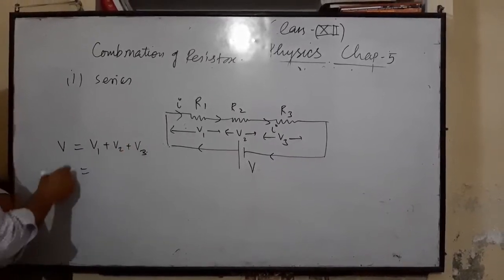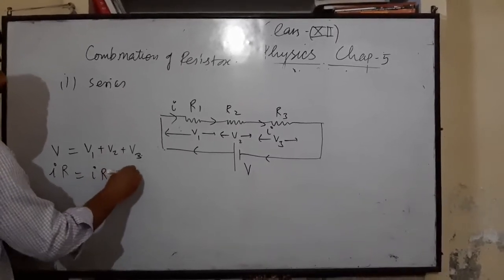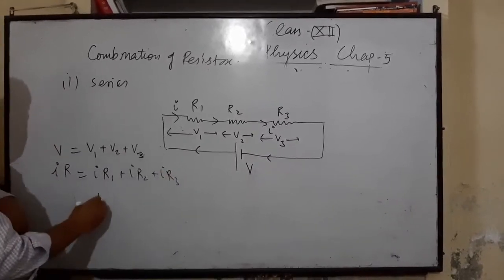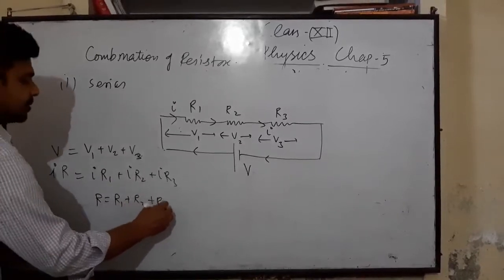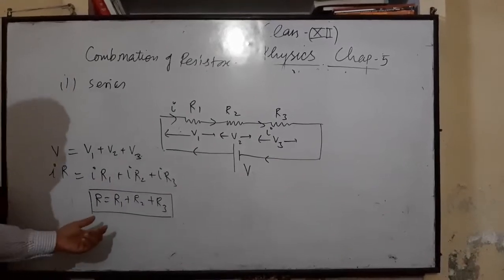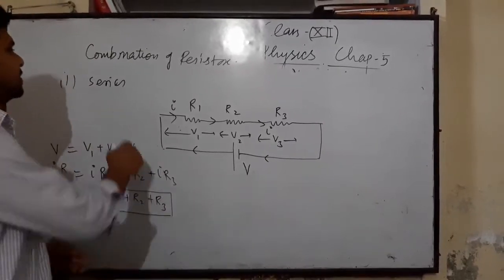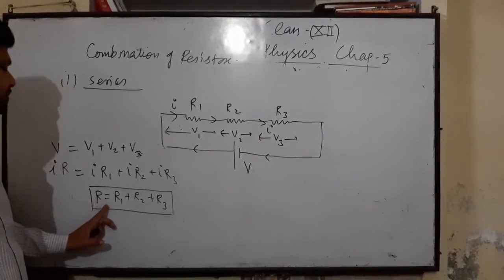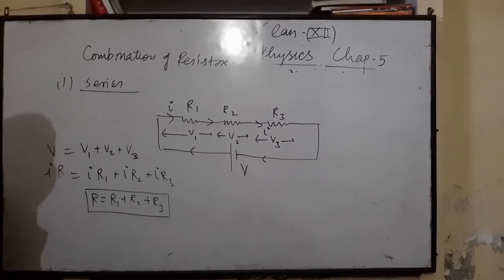Using V = IR, we get IR = IR1 + IR2 + IR3, where R is the equivalent resistance. So in series combination, the equivalent resistance R = R1 + R2 + R3. If we want to find the maximum equivalent resistance from a set of resistors, we must combine all resistors in series.